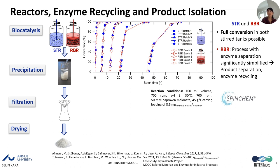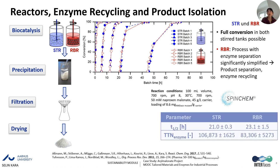I have to highlight that working with the rotating bed reactor is very practical because you can easily take out the immobilized enzyme and reuse it the next day. When comparing the stirred tank reactor and rotating bed reactor, the half-life times were quite similar. The total turnover numbers were slightly higher in the stirred tank reactor, but as highlighted, the rotating bed reactor is very practical for repetitive batch operations.